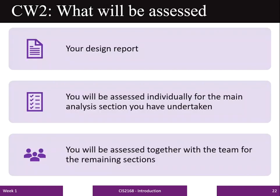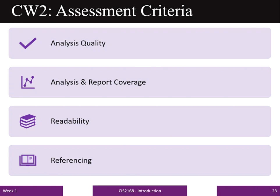Your report will be assessed individually for the main analysis — for example, a student working on page hit analysis will be assessed on that — and then the overall report will be assessed as a group. The assessment criteria for coursework 2 is based on four key factors: analysis quality, analysis and report coverage, readability of the report, and referencing. You need to provide proper referencing to back up your report.